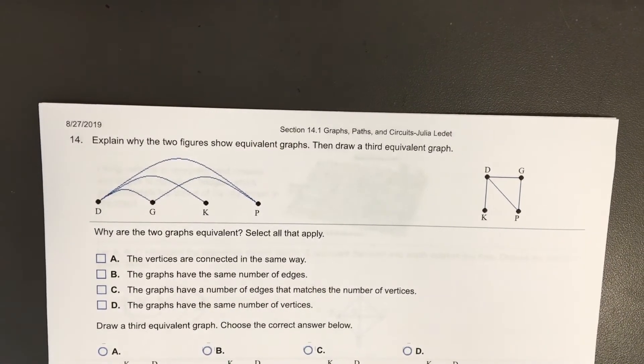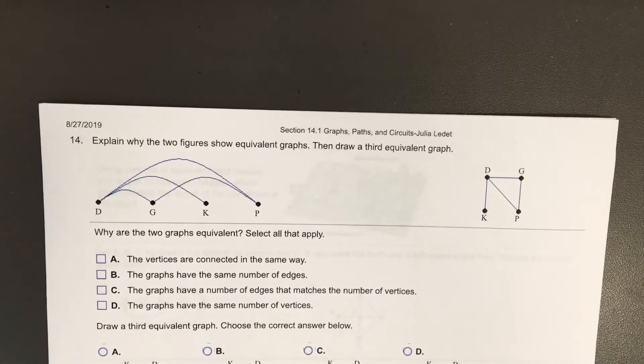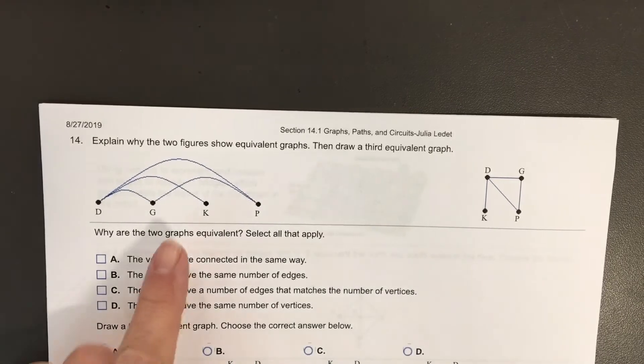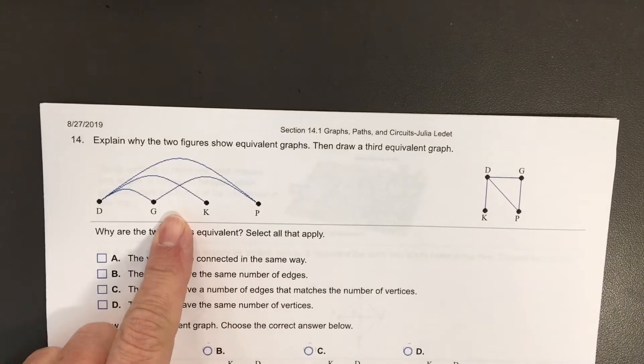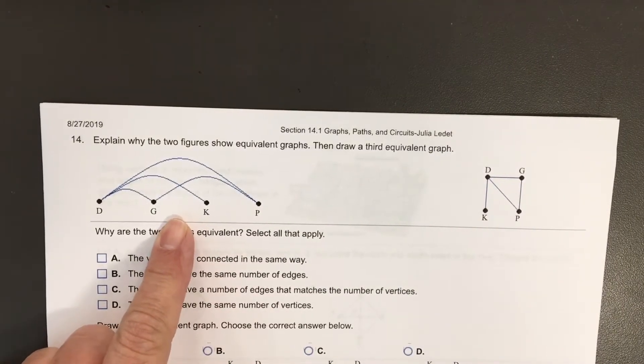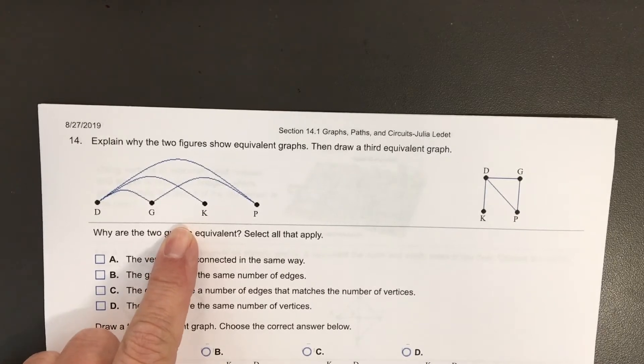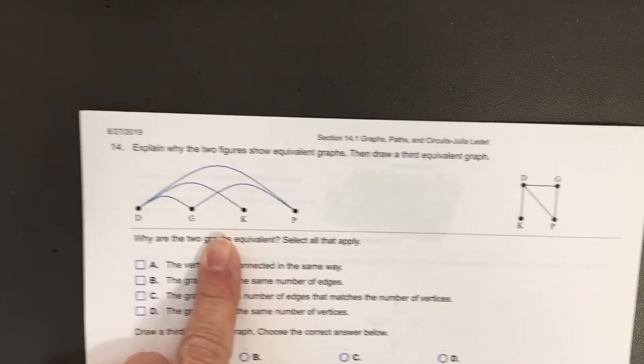Problem 14 is about equivalent graphs. Take a look at the graph on the left. This is one of the most poorly drawn graphs I have seen, because look what happens.